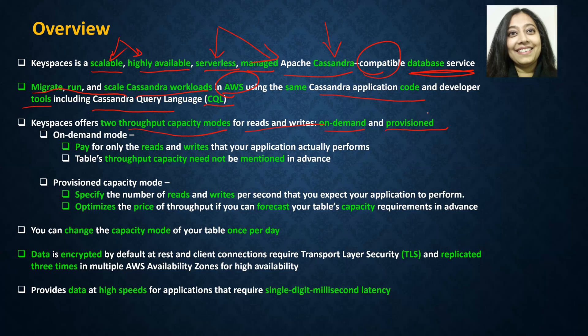If you do know your capacity, you would go for the provisioned capacity mode, where you specify the number of reads and writes and provide the throughput capacity for your table. By using provisioned capacity mode, you can get an optimal price for this service, and you will see the difference between on-demand and provisioned capacity mode when we look at pricing.